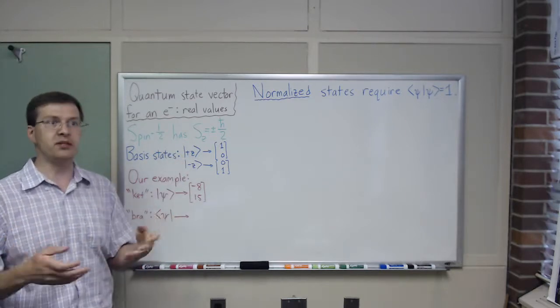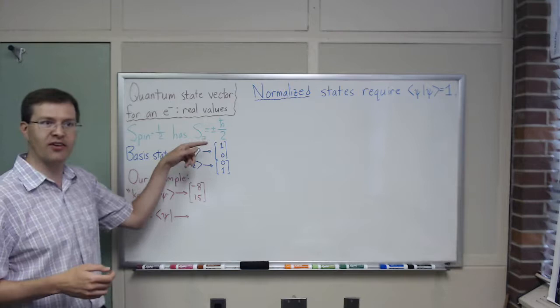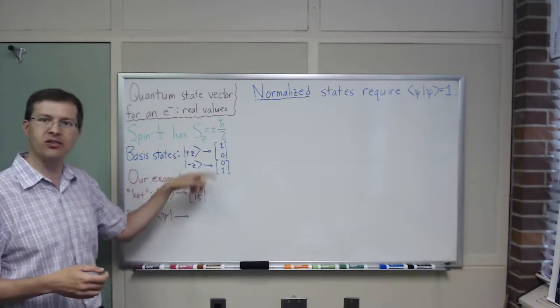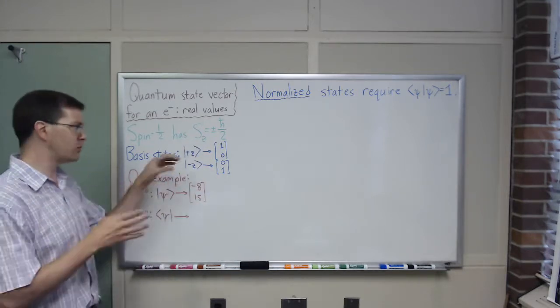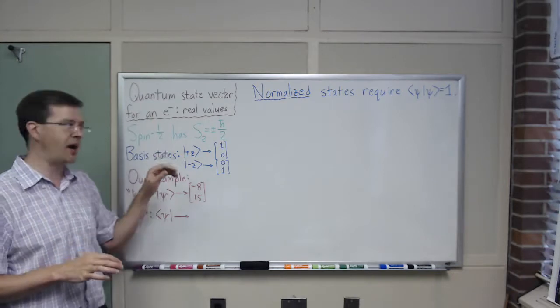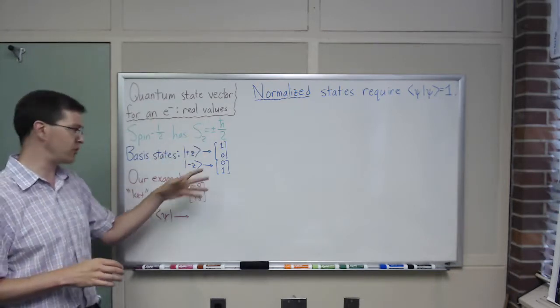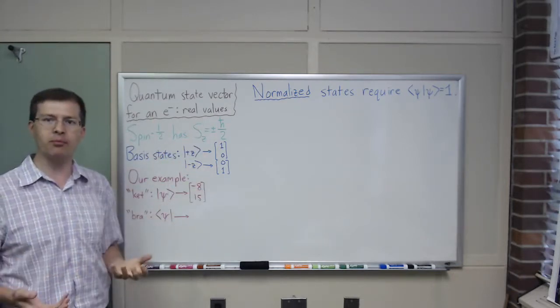If this were a spin-2 system or something, we'd have nine possible Sz values, and we'd have nine dimensional vectors here. Simple case: spin one-half, Sz equals plus or minus ℏ/2.